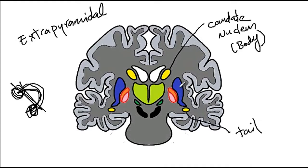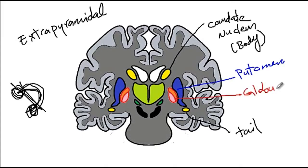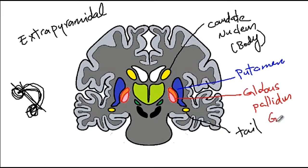Then we have the putamen, shown in blue. The orange and pink structures are the globus pallidus, which is divided into two parts: the external part shown in orange, known as globus pallidus externus or GPE, and the internal part shown in pink, known as globus pallidus internus or GPI.